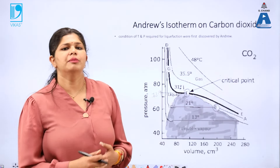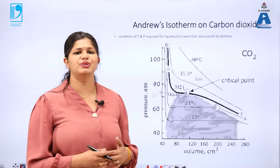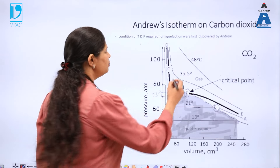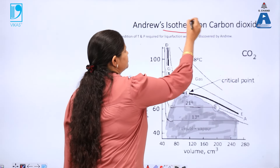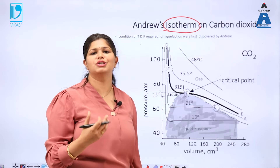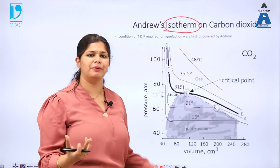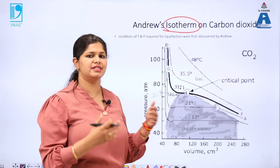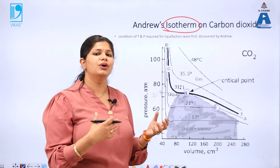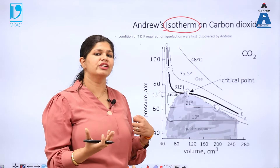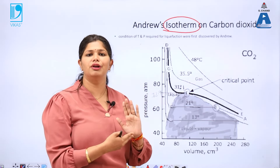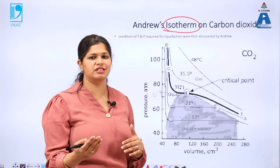This is a diagrammatic representation of Andrews isotherm. What do we mean by isotherm? Isotherm is a graph at constant temperature — iso means same, therm means temperature. So a same-temperature graph means it is a variation of pressure and volume at a fixed temperature.